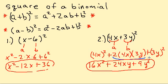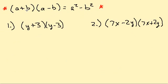Those are our formulas — these two here — to square a binomial. Let's take a look at another one. We're going to multiply (a + b) times (a - b), and that's equal to a squared minus b squared.